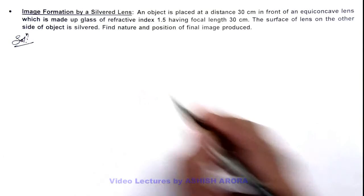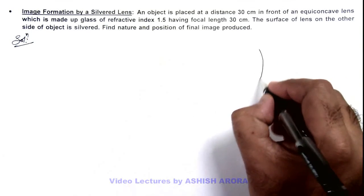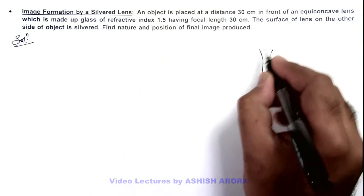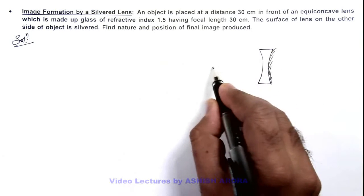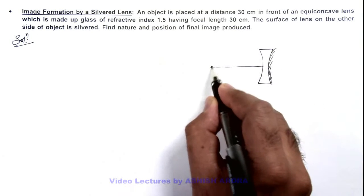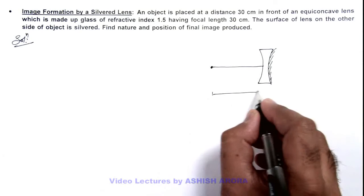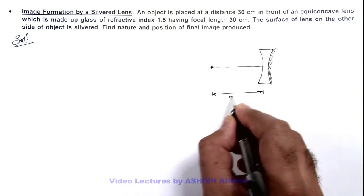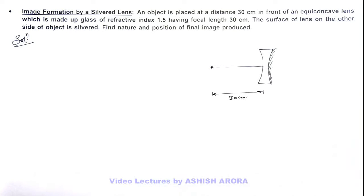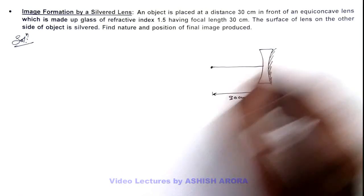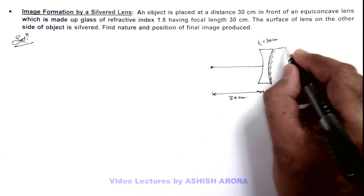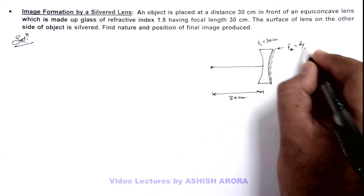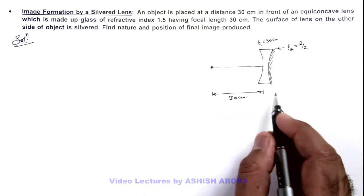Here if we draw the picture, we are given that there is an equi-concave lens, and one side of this lens is silvered and on the other side an object is placed at a distance of 30 centimeter from the lens. Here in this situation, we are given that the focal length of lens is 30 centimeter. For this mirror, focal length of mirror can be written as r by 2 if r is the radius of curvature of this lens.